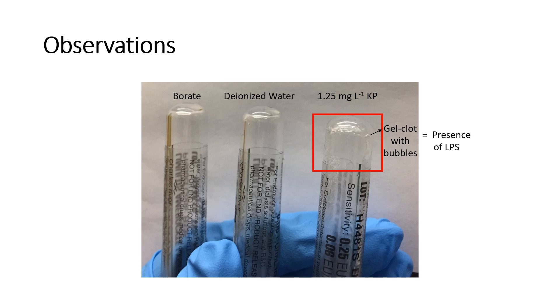On the other hand, the KP standard of 1.25 mg per liter showed the formation of gel clot with bubbles. Hence, this confirms the presence of LPS.